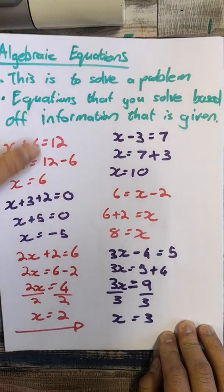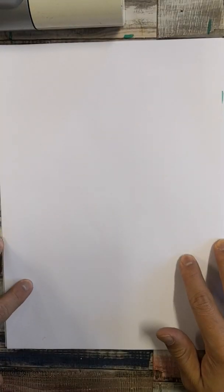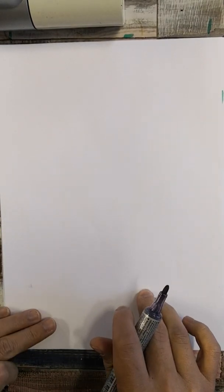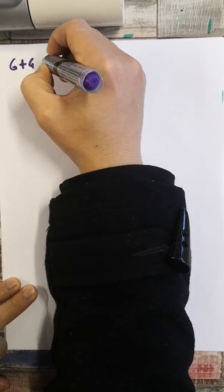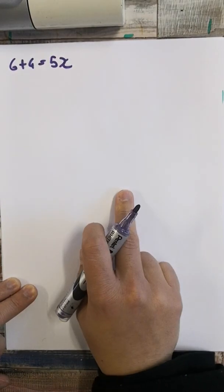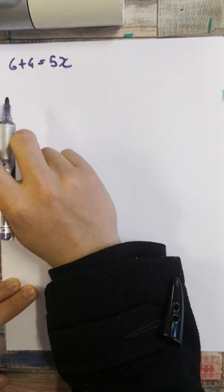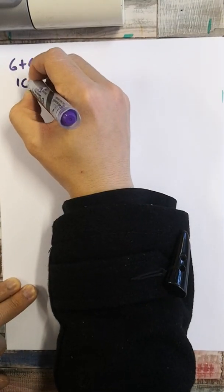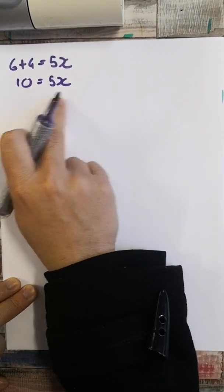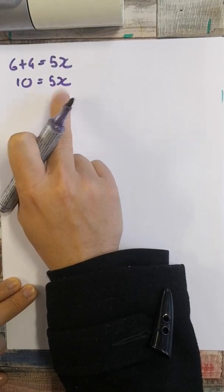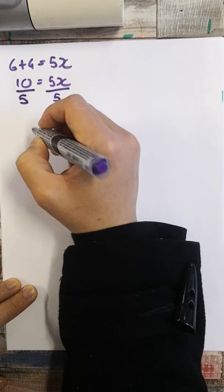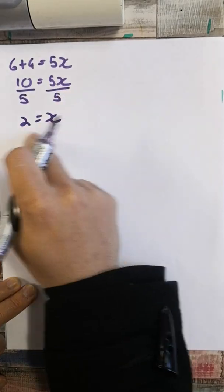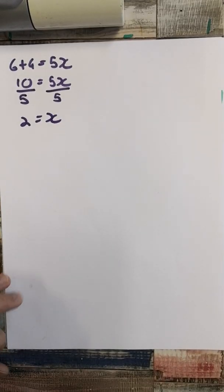Remember, if you need to stop at any moment, just click pause. New equation: 6 plus 4 equals 5x. I'm left with addition, so I look for like terms — 6 and 4 are like terms, so that's 10 equals 5x. I divide by my coefficient, which is 5. 10 divided by 5 equals 2, so x equals 2.